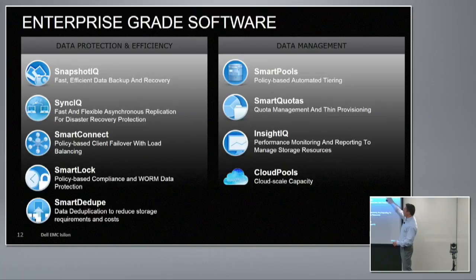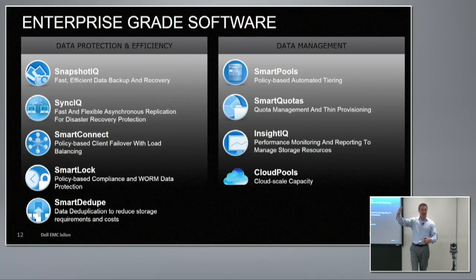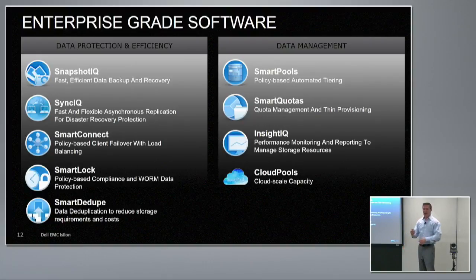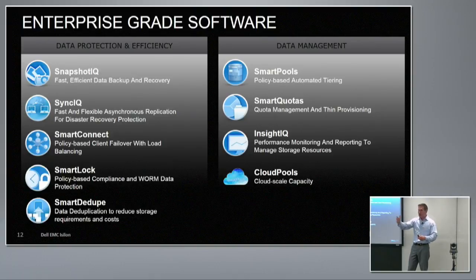On the data management side, we have Smart Pools. You can add different node types into a cluster — high performance nodes and high capacity nodes. Smart Pools moves data between different node types based on policy. Maybe you want data to have high performance for the first 30 days, then age it out into high-capacity nodes for long-term retention. You can set those policies based on directory, user, age, last modified, and more. From an application perspective, the data didn't move — the file system hierarchy looks the same — but logically, where we keep those bits changes.